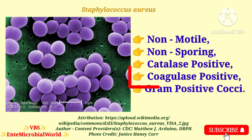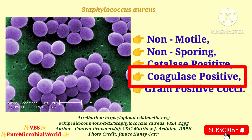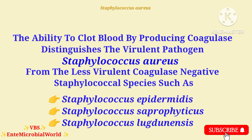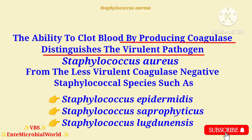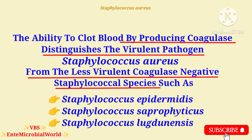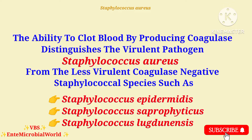Next we are going to see the importance of the coagulase test. The ability to clot blood by producing coagulase distinguishes the virulent pathogen Staphylococcus aureus from the less virulent coagulase negative Staphylococcus species such as Staphylococcus epidermidis, Staphylococcus saprophyticus and Staphylococcus lugdunensis.